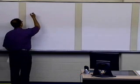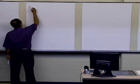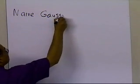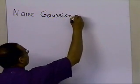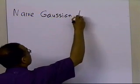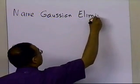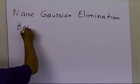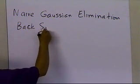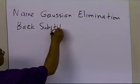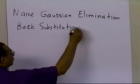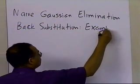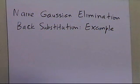In this segment, I'm going to continue with the example we had for naive Gaussian elimination. We were looking at an example to solve a set of simultaneous linear equations, and we're going to do the back substitution part. There are two parts to naive Gaussian elimination, or even Gaussian partial pivoting which we'll do later: there's a forward elimination part, and there is a back substitution part.